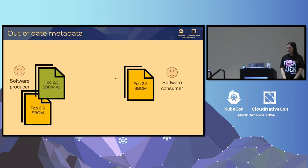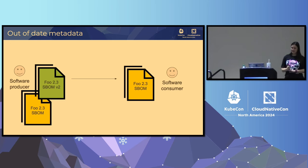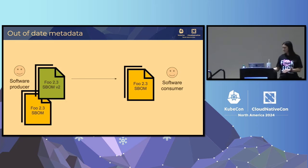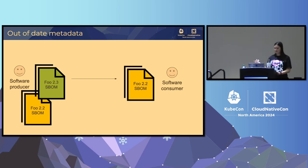There are also more subtle problems. For example, the SBOM for a particular piece of software may have changed — this is maybe more relevant for VEX than for SBOMs, but this metadata does change. You might have a v2 of the SBOM for the same version of software, and you want to make sure the consumer gets the current version of the SBOM, not a stale one. Similarly, the SBOM might change between foo 2.2 and foo 2.3, so you want to make sure you're on the correct one.